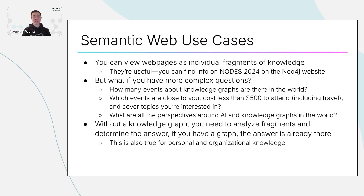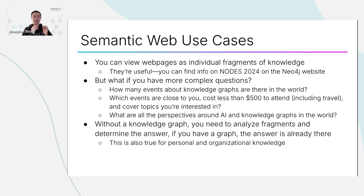One area that's particularly interesting to me is using a global knowledge graph to figure out all the perspectives around something — for example, all perspectives around AI and knowledge graphs. Neo4j's GraphRAG manifesto would actually be a very good example of a perspective. For every single perspective out there, it would be really cool if you could see all of the arguments, the evidence for those arguments, and what people think about every distinct piece of evidence, every argument, and the perspectives as a whole. That's what I think is a true aggregation of human knowledge — where you can look at something and see the state of all of humanity's knowledge about that topic in an instant.